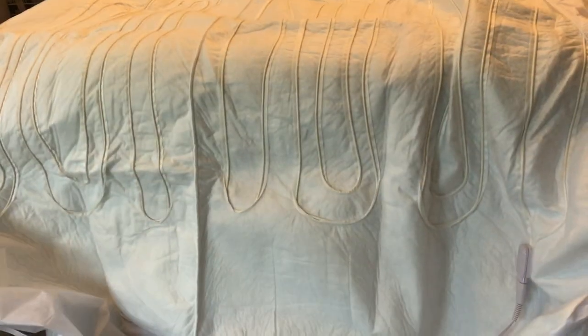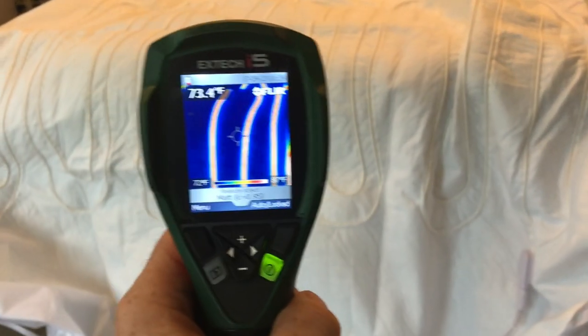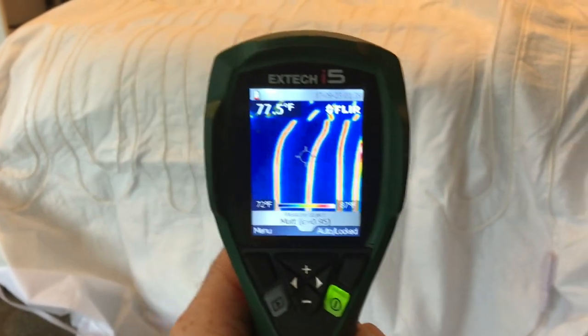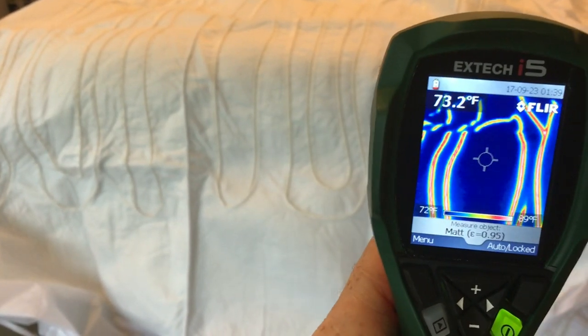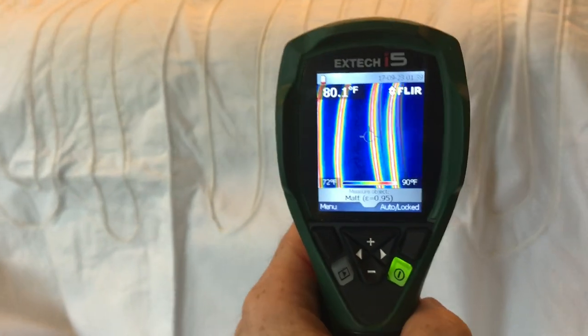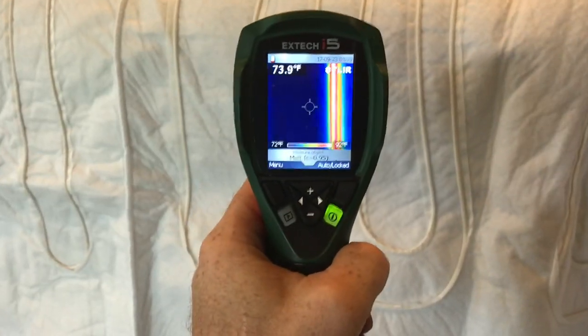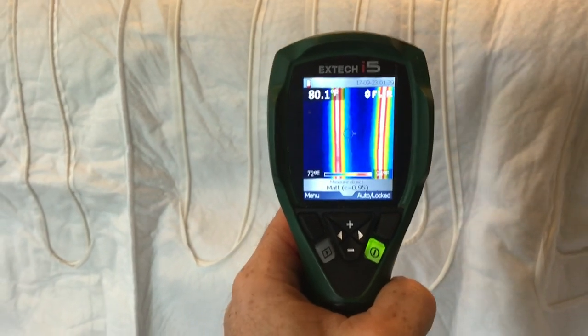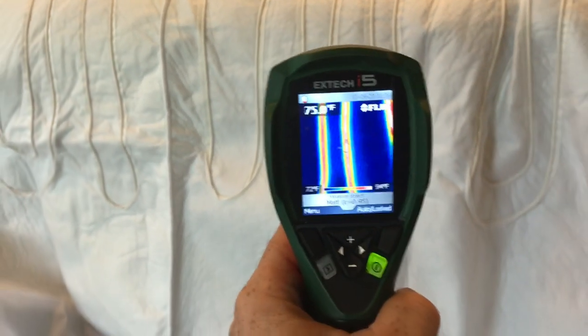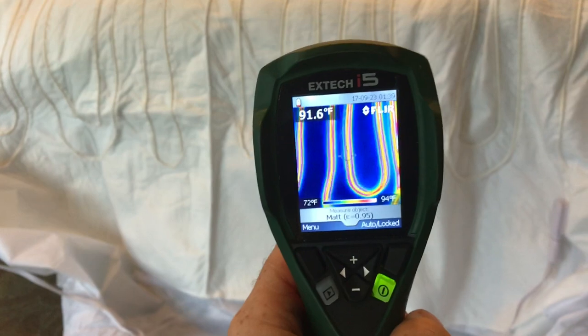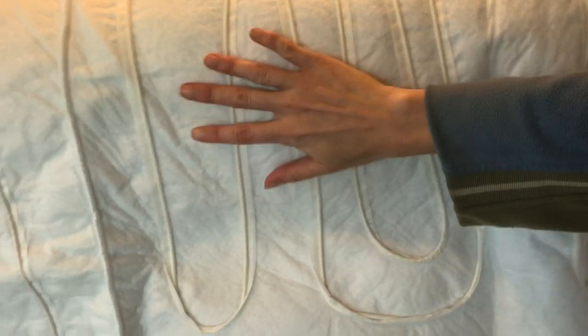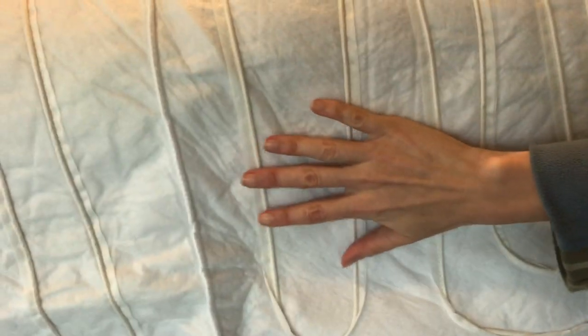As soon as we turn on the electric blanket you can see that everything's getting warm, probably about 75 to 80 degrees. If we bring the thermal camera a little closer we may be able to get it up to about 90 degrees. If you feel the blanket with your hand it feels warm, not hot, but warm.